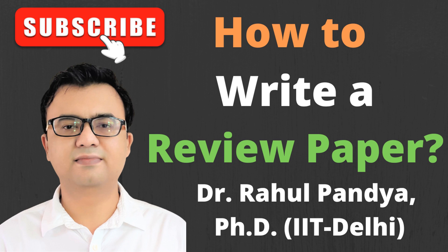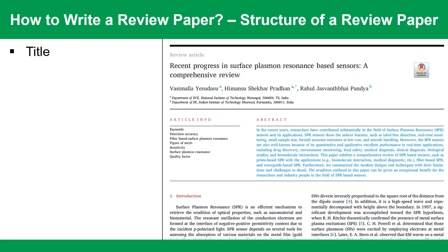A general structure of a review paper is comprised of the following. A title indicates the impactful insight of the article so that the readers can decide whether the article is relevant to the research or not.